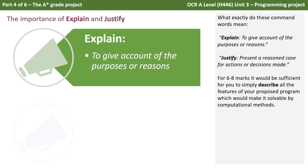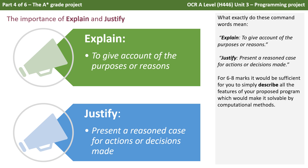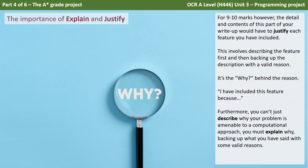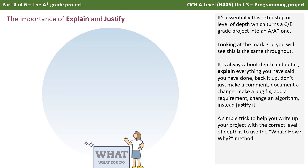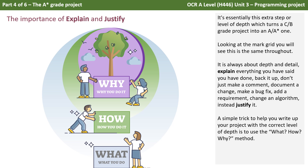So what exactly do these command words mean? 'Explain' means to give an account of the purpose or reasons, and 'justify' means to present a reason or case for actions or decisions made. For six to eight marks it would be sufficient to simply describe all the features of your proposed program which would make it solvable by computational methods. But for nine to twelve marks, the detail and contents of this part of the write-up would have to justify each feature you've included. This involves describing the feature first and then backing up the description with a valid reason — it's the 'why' behind the reason: 'I've included this feature because...' Furthermore, you can't just describe why your problem is amenable to a computational approach; you must explain why, backing up what you've said with some valid reasons. It's essentially this extra step or level of depth which turns a C or B grade project into an A or A-star one.